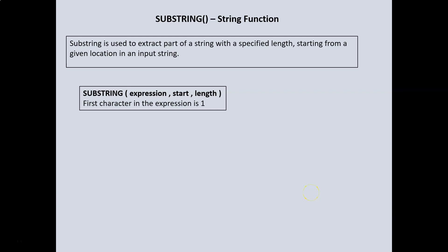Substring is used to extract part of a string with a specified length starting from a given location in an input string. The syntax for substring is this: we have the keyword SUBSTRING, then in brackets the first expression which is the character or string value, a comma then START which is where we want to start extracting from, and then comma LENGTH which is the total amount of characters we want to extract. The first character in the expression is one.